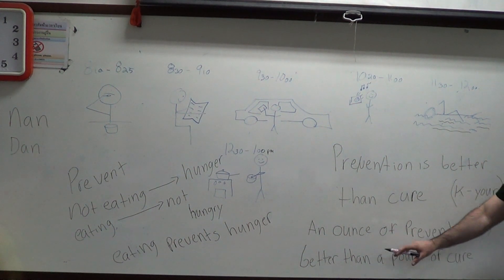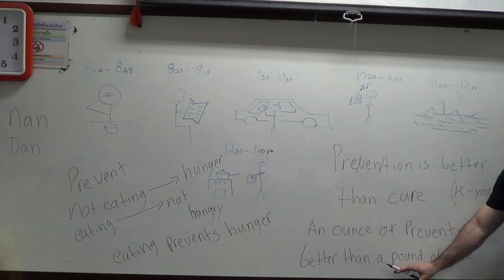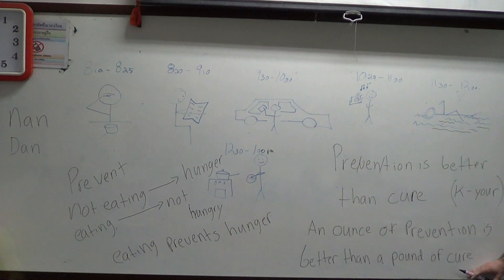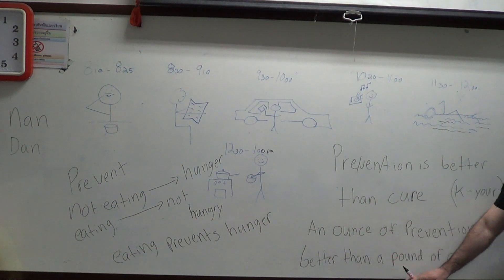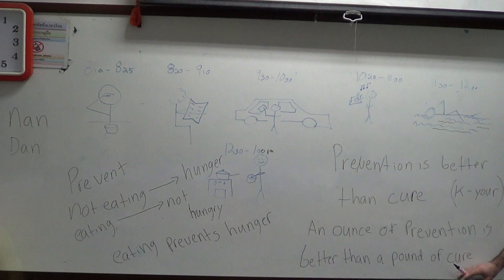And this says the same thing. An ounce of prevention is better than a pound of cure. So ounce and pound are units of measurement, are units of weight. An ounce is very small and a pound is larger. I don't know exactly how many ounces are in a pound, but it is a lot. A little bit. A little bit of prevention is better than a lot of cure, better than a lot of medicine or of that after the fact measure.